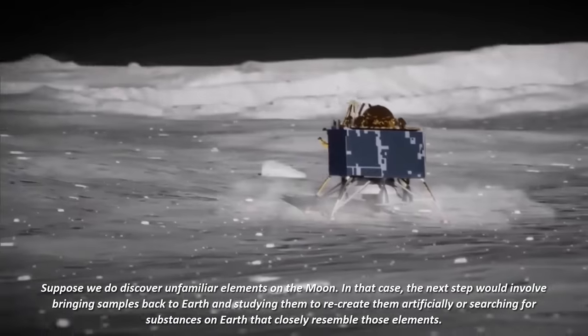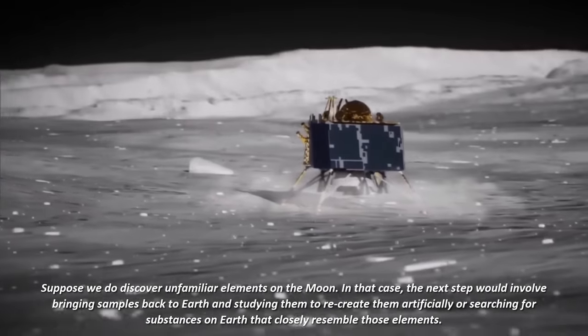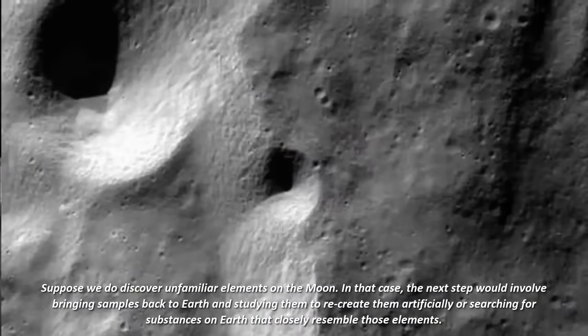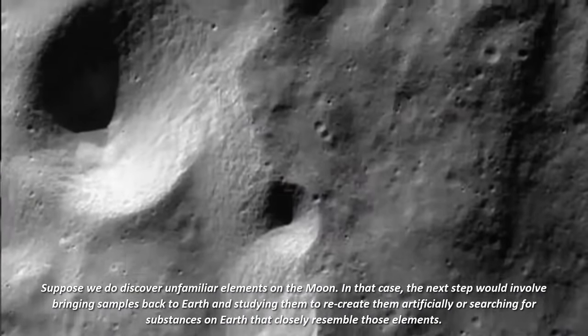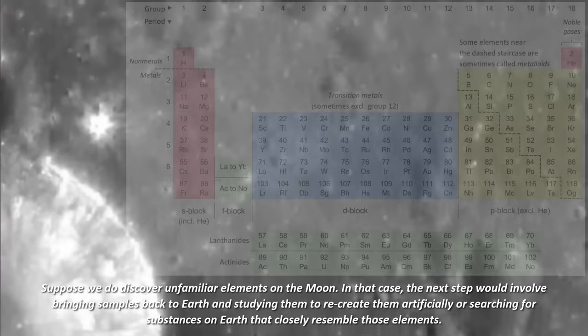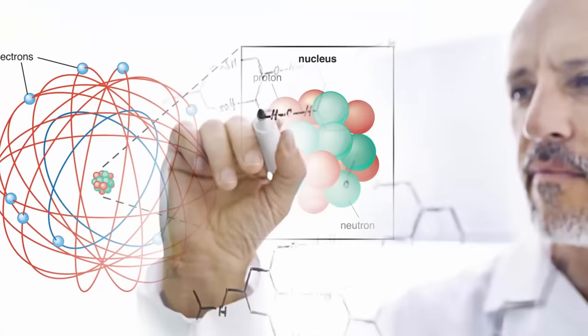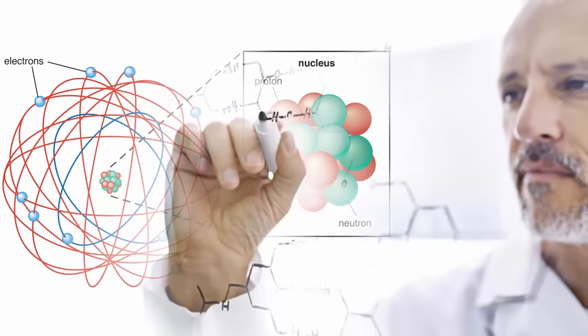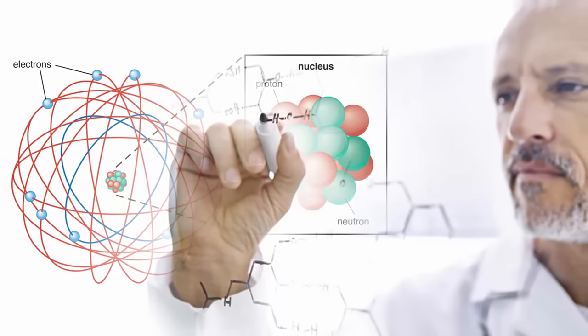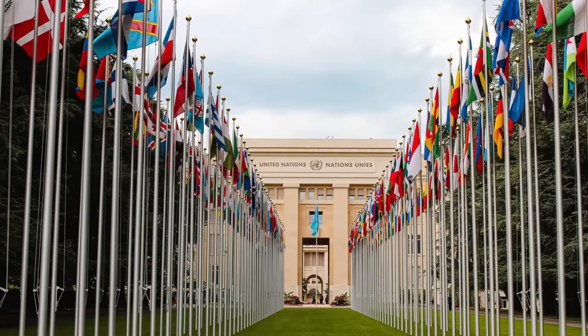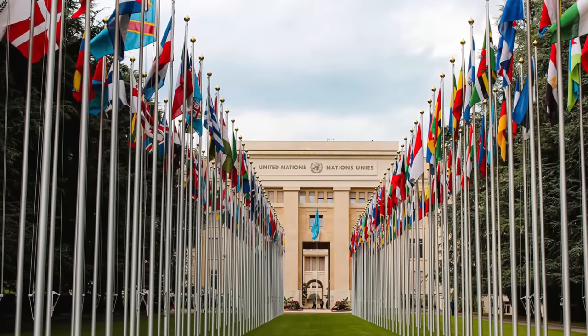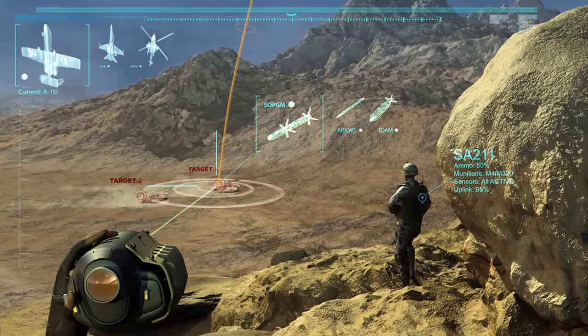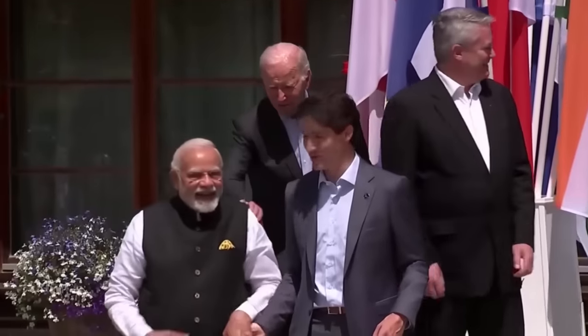Suppose we do discover unfamiliar elements on the Moon. The next step would involve bringing samples back to Earth and studying them to recreate them artificially or searching for substances on Earth that closely resemble those elements. Once we achieve significant success in uncovering or replicating these rare earth elements, how will it help a country? Typically, the government is not going to release those elements into the commercial market. First, they will be used for advancing military technology, because that is what is going to give any country an edge over others.